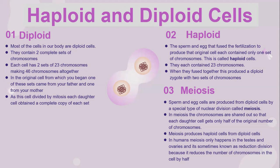Meanwhile, haploid cells are the sperm and egg cells that fuse at fertilisation to produce the original cell. Each contains only one set of chromosomes, and this is called a haploid cell — they each contain 23 chromosomes. When they fuse together, this produces a diploid zygote with two sets of chromosomes.